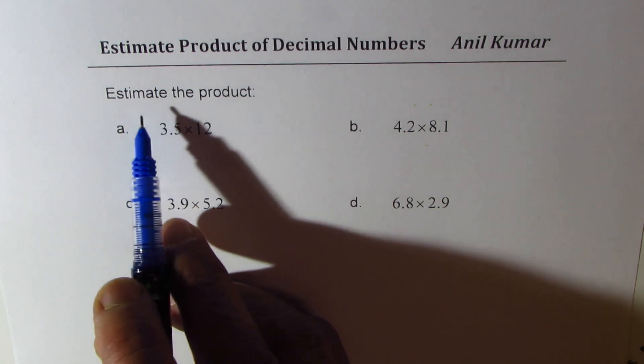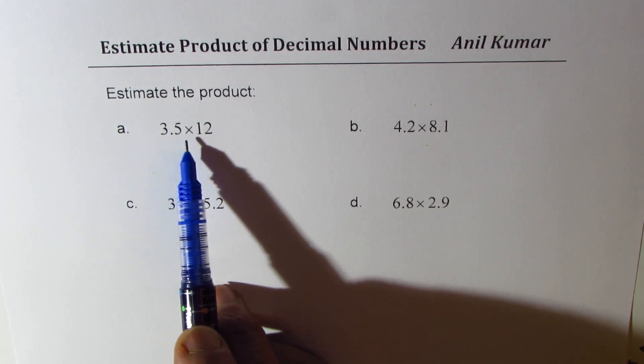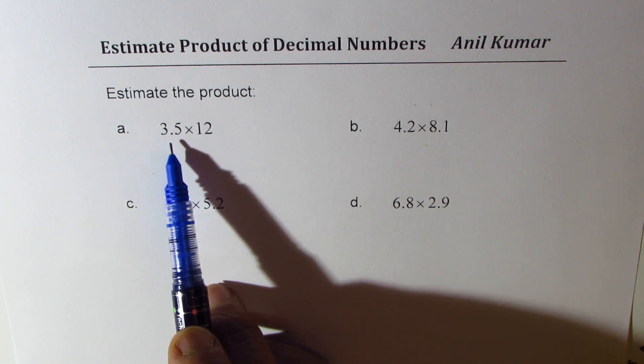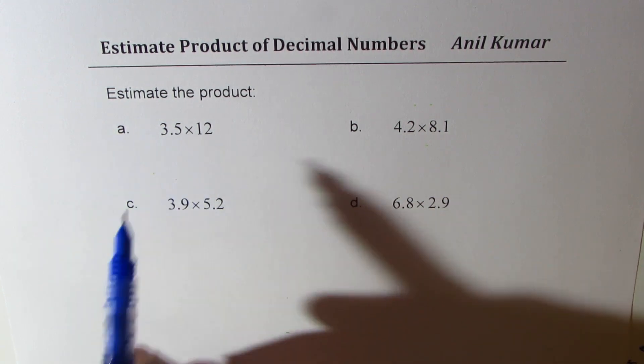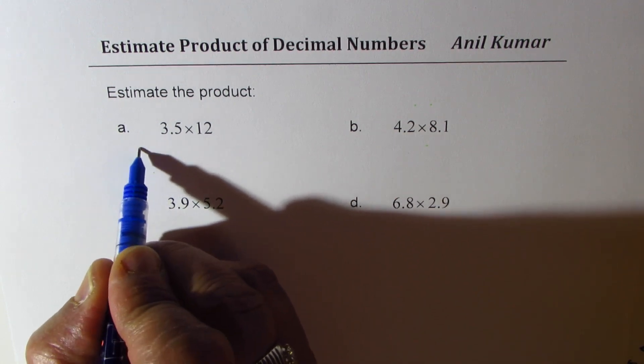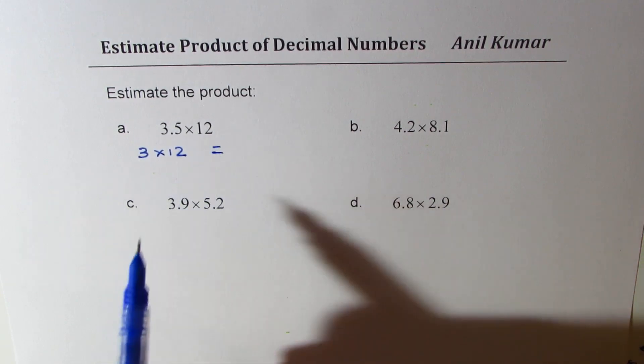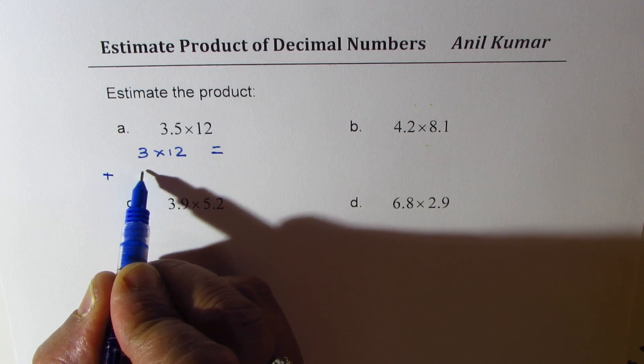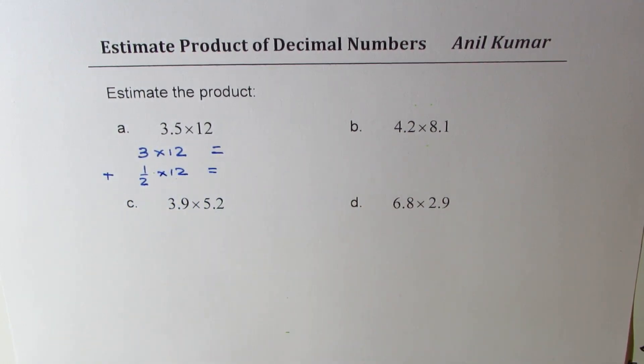Now we have to estimate. We don't really have to find the exact answer. The first one is 3.5 times 12. So we could think like this: we could multiply 3 by 12 to get our answer. We know it is lower, so we could add half of 12 to get the final answer.